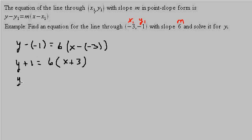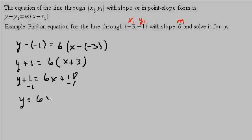All I did is change this to plus and change this to plus. So now let's solve for y. I get y plus 1 equals 6x plus 18. Subtract 1, I get y equals 6x plus 17. And there's the equation of our line.